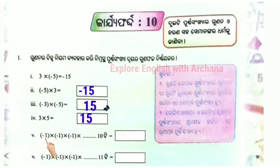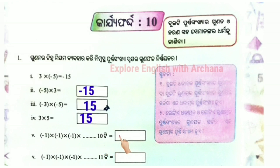Minus 1 into minus 1 into minus 1 into even 10. Minus 1. Minus 1 into minus 1, preliminary result is 1. Minus 1 into minus 1, minus 1 into minus 1.